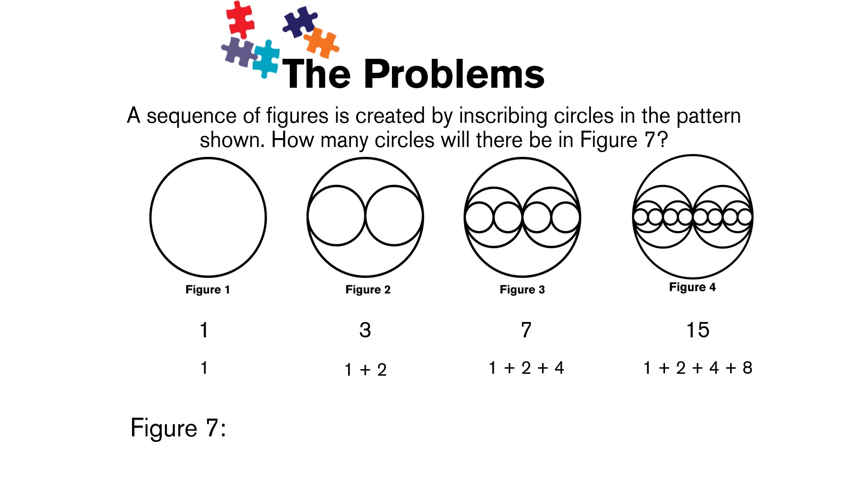So to find figure 7, we would follow this pattern and add 1 plus 2 plus 4 plus 8 plus 16, which is 2 times 8, plus 32, which is 2 times 16, plus 64, which is 2 times 32. And we would find our final answer, which gives us 127 circles.